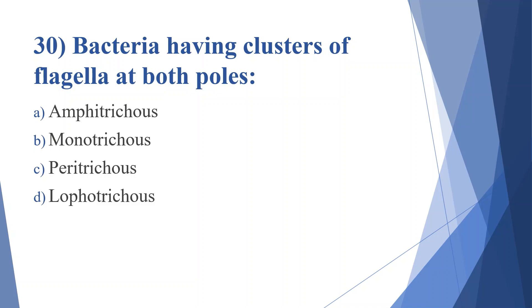Thirtieth question: bacteria having clusters of flagella at both poles. Option A: amphitrichous. Option B: monotrichous. Option C: peritrichous. Option D: lophotrichous. Answer is option A, amphitrichous.